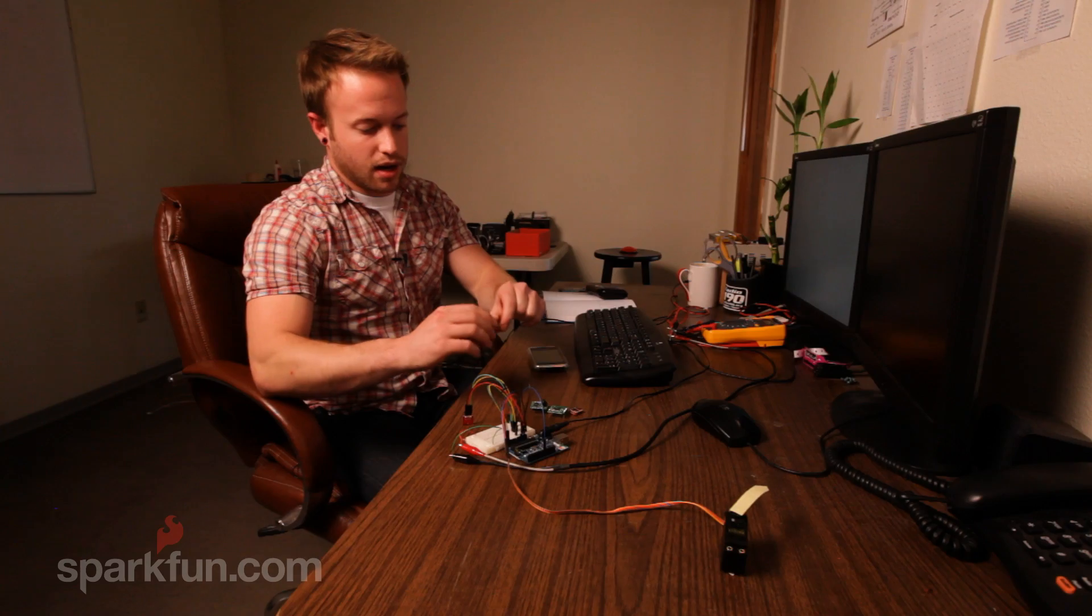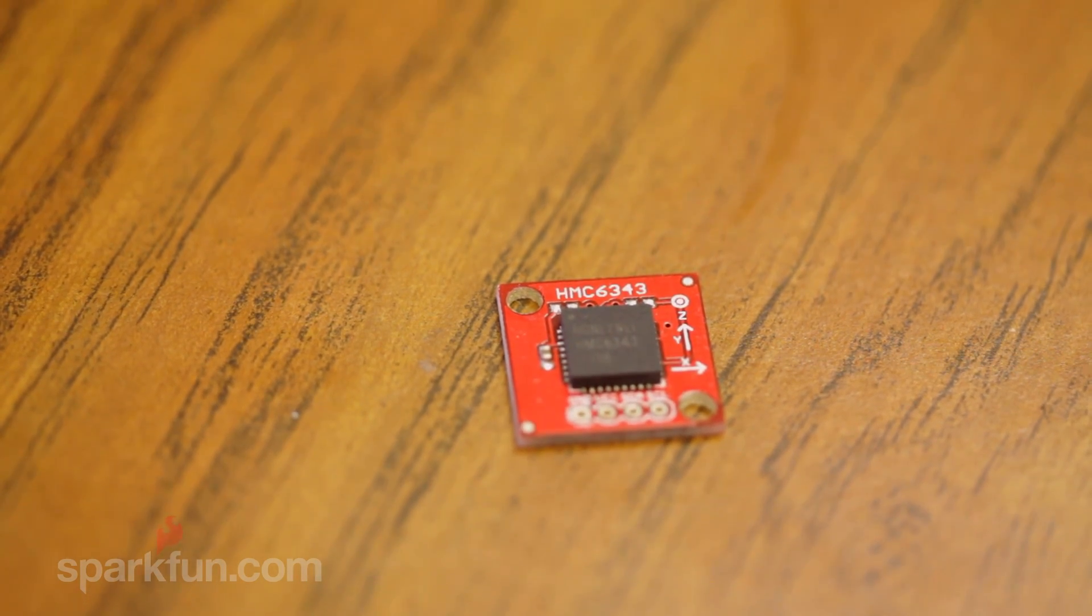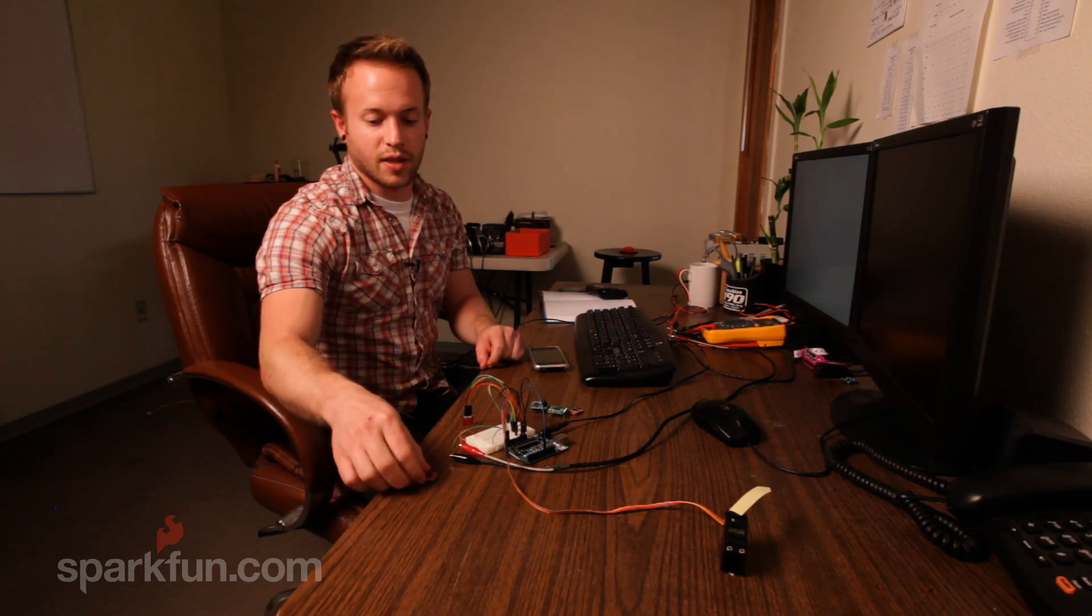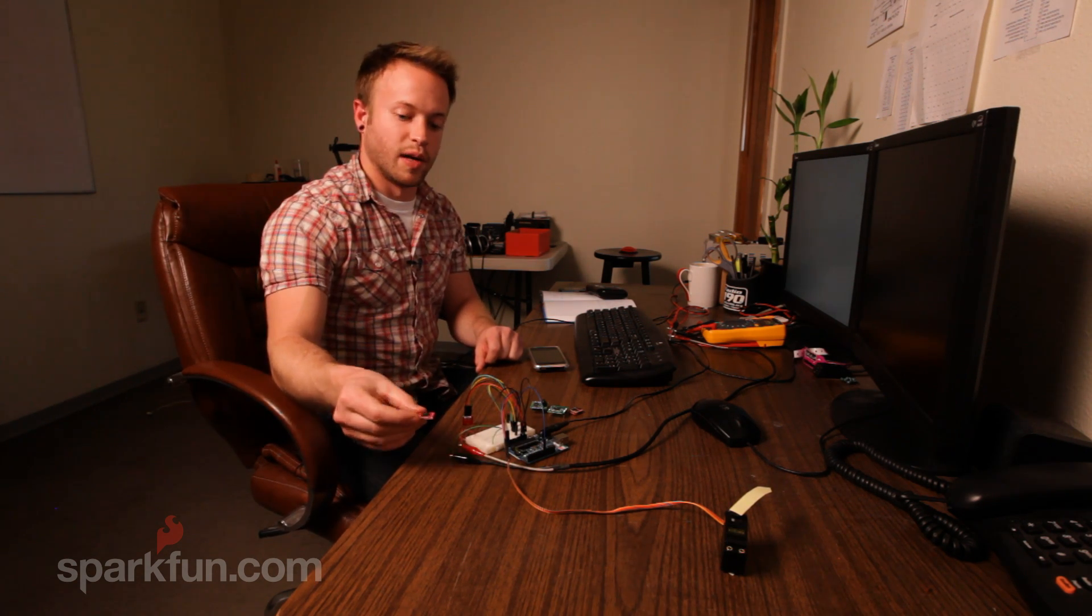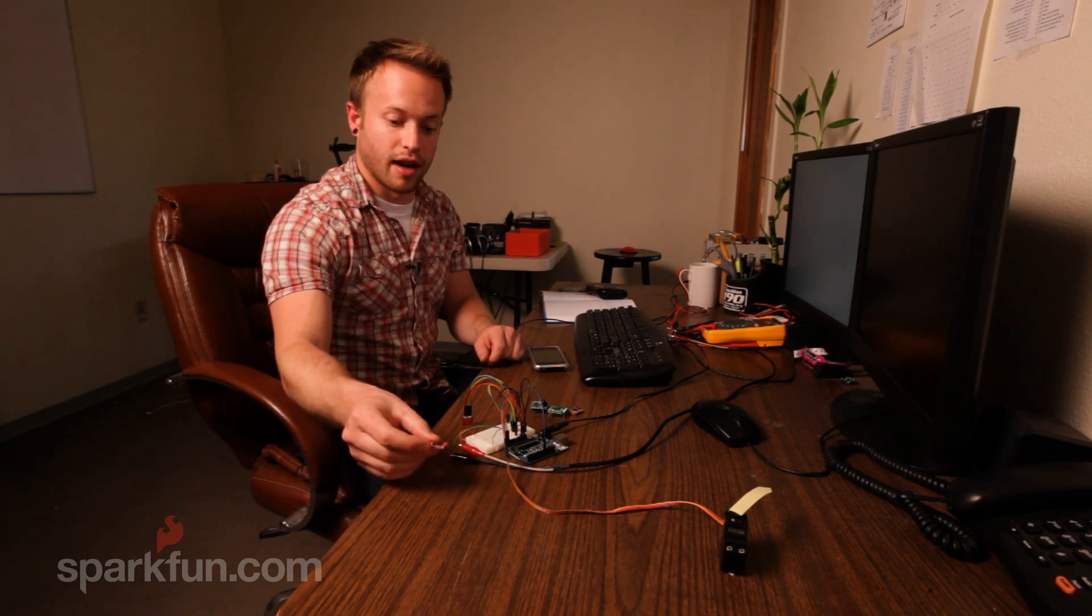We sell the HMC 6343, which is tilt compensated, meaning that it can tilt to a certain degree and still take a north heading, so your robot doesn't have to be perfectly flat all the time.